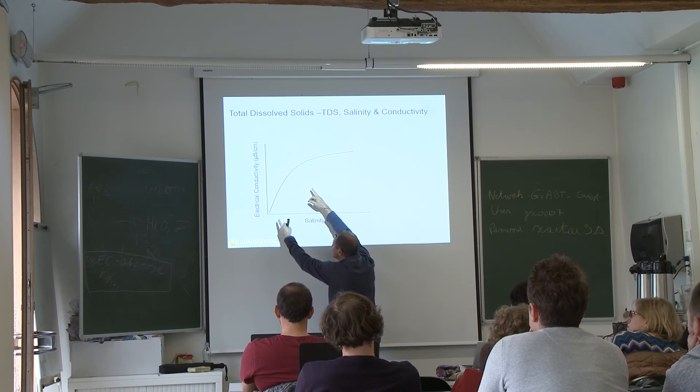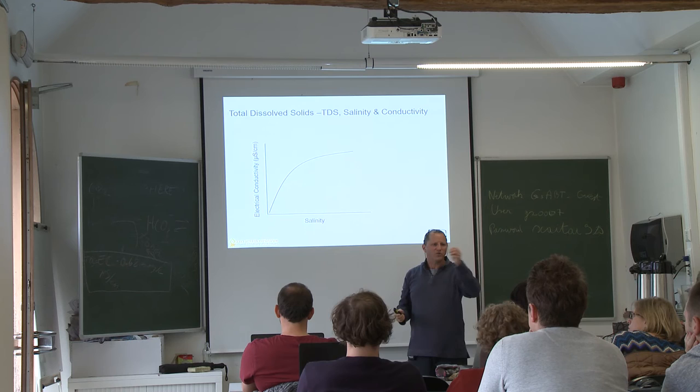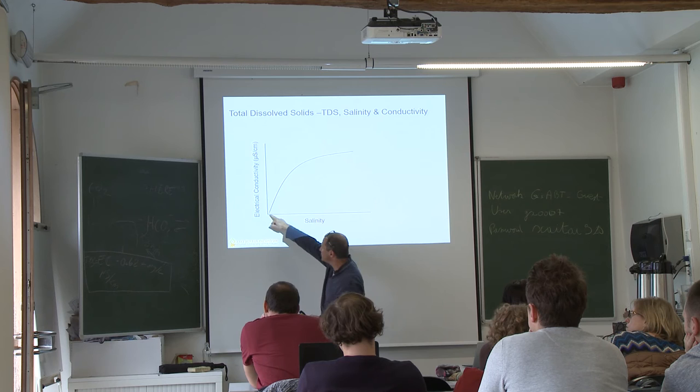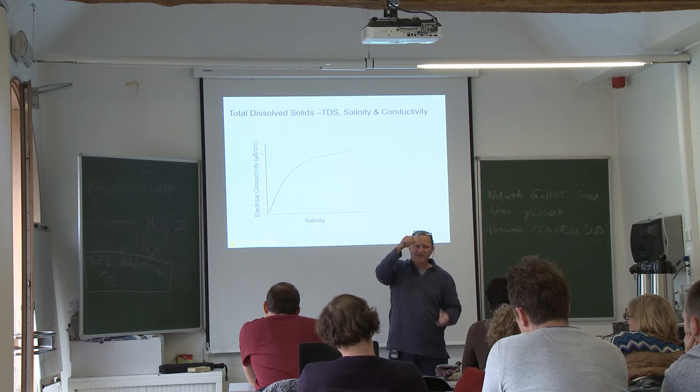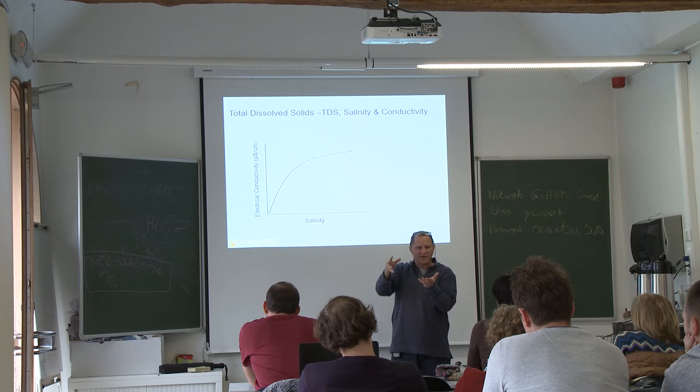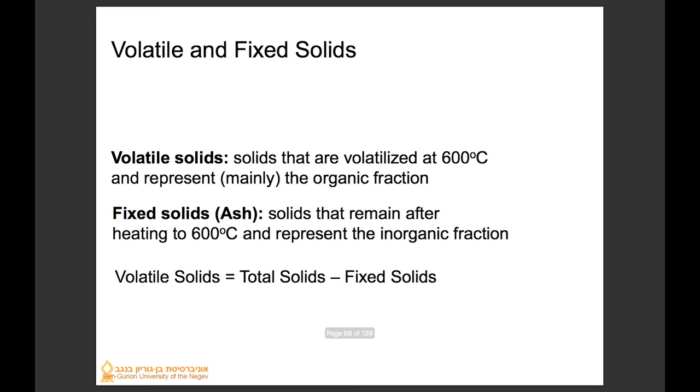For fresh water the EC-to-salinity relationship is pretty much a straight line. It works well up to brackish water — up to about 15 millisiemens. Different algorithms represent these lines, and many conductivity meters have a built-in algorithm so you just press a button and it gives you TDS directly — it measures conductivity but converts it to salinity automatically.